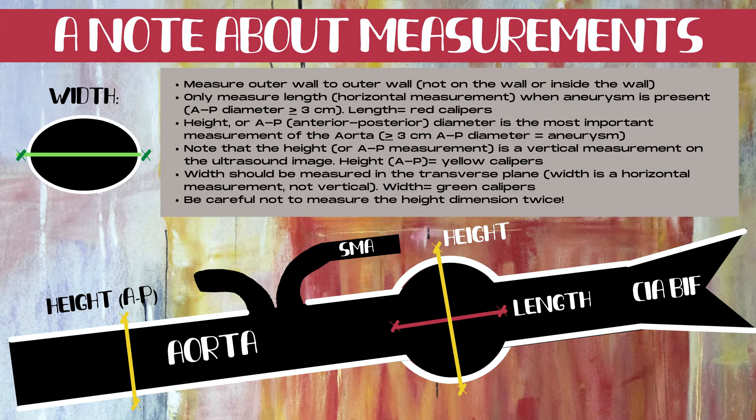The first set of yellow calipers in the proximal aorta demonstrates a normal aorta measurement when the aorta is of normal caliber. It's really important that the calipers are placed 90 degrees perpendicular to the lie of the aorta. When measuring an aneurysm, as shown more distally in this image, the calipers are also placed outer wall to outer wall, and that AP or height dimension is measured at its greatest diameter, 90 degrees perpendicular to the lie of the aorta itself.